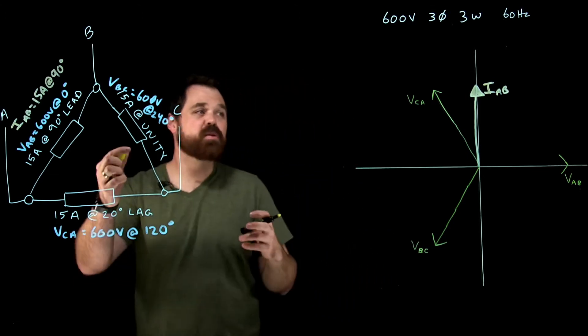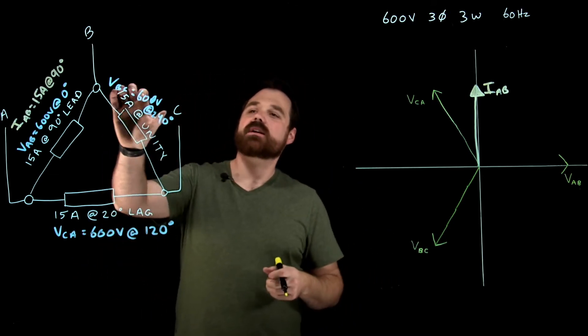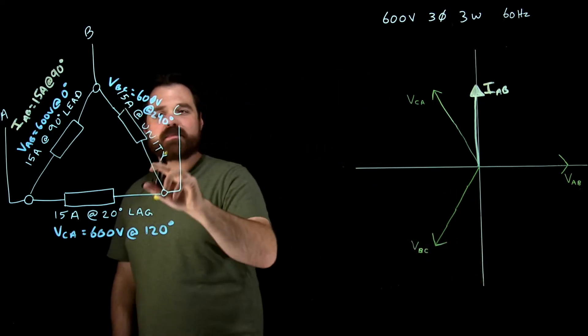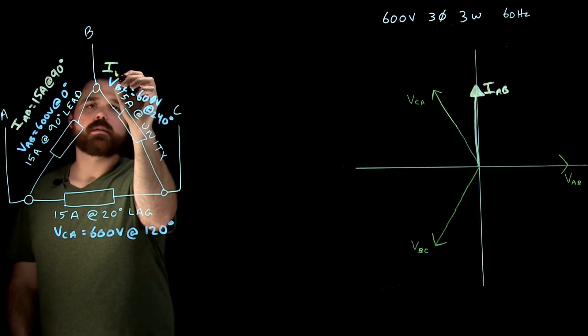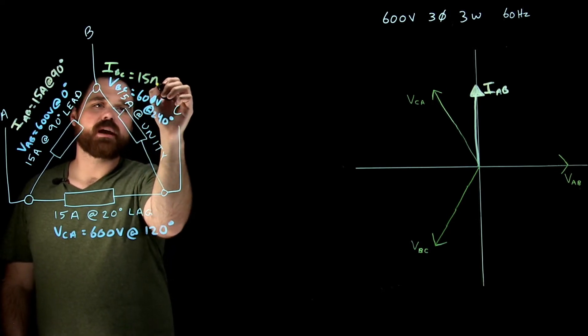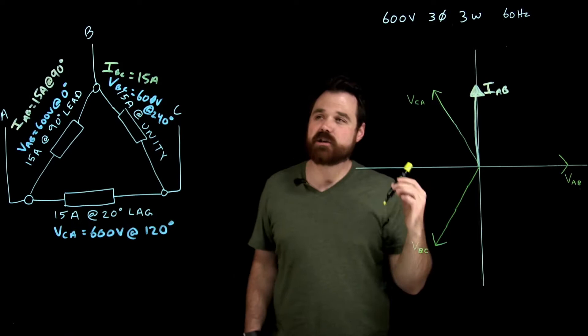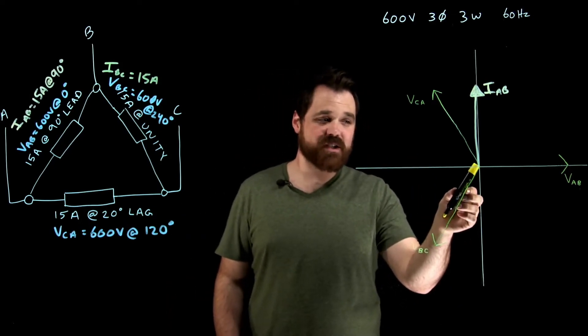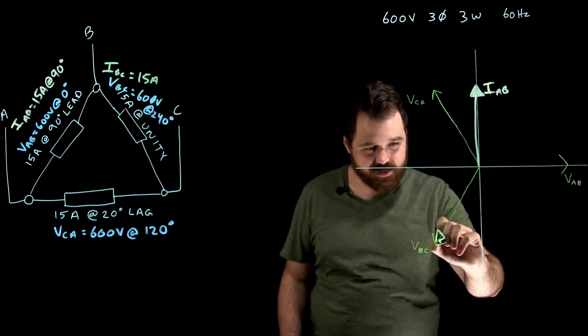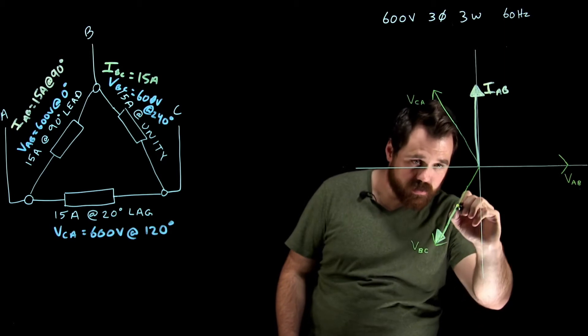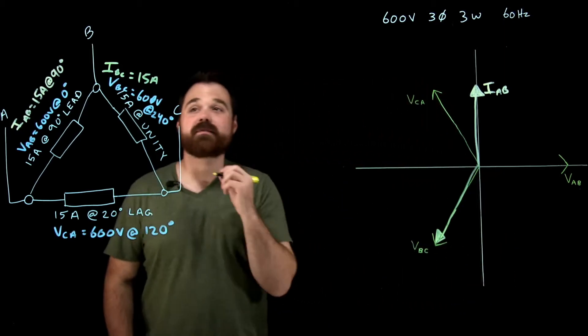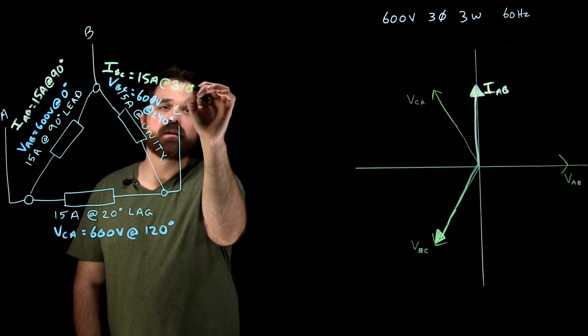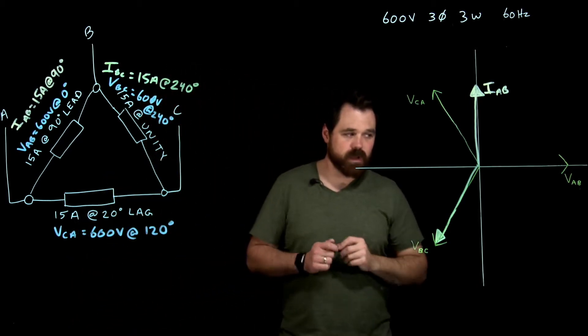Now let's talk about the B phase current. So the B phase, I've got 600 volts at 240 down here. Now I've got 15 amps at unity. So we know I B to C equals 15 amps. Now it's at unity, which means that the current and the voltage are in phase with each other, which means that my current is actually going to be right here directly on top of my voltage, which puts it at the same 240 degrees.